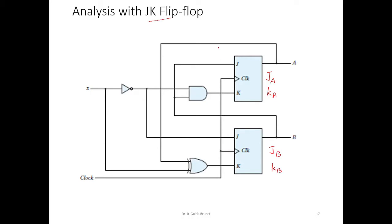What is the input for JA? JA is given B — B at time T is given as input to J. And K has a combinational circuit: this is B and this is X bar. So what we get here is BX bar. So KA is BX bar.